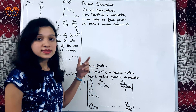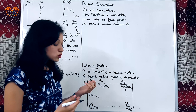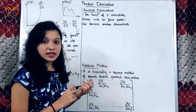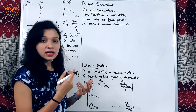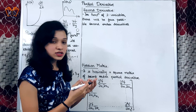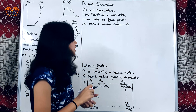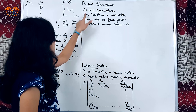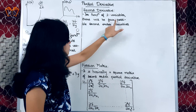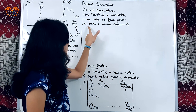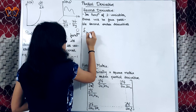Whenever we go for the second derivative, there are four combinations possible. Those four are: differentiating with respect to x twice, differentiating with respect to y twice, and then differentiating with respect to x then y, and y then x. So for the second derivative of a function of two variables, there will be four possible second-order derivatives. Let us see which those are.